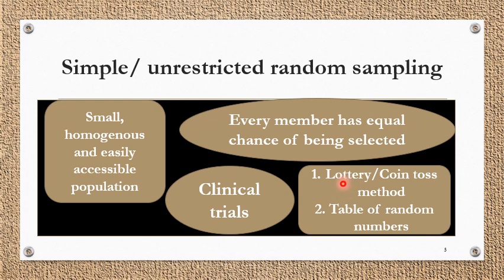One is the lottery method. Like if you go to a mall and fill a form for a lucky draw — they put all the slips in one box and pick them one by one. There is randomization; every person has an equal chance of getting selected. In clinical trials when comparing two groups, whether patient number one goes to group A or group B can be decided by a coin toss — also a method of randomization.